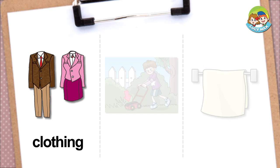Let's study some words. Clothing. Clothing is what we wear. In the picture, there are two sets of clothing. One is for a man. The other is for a woman.